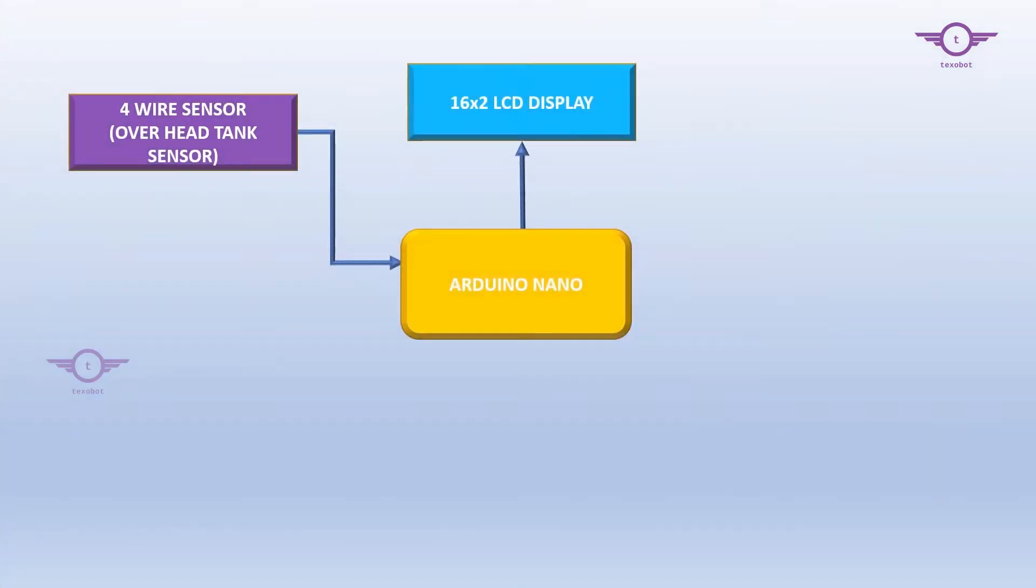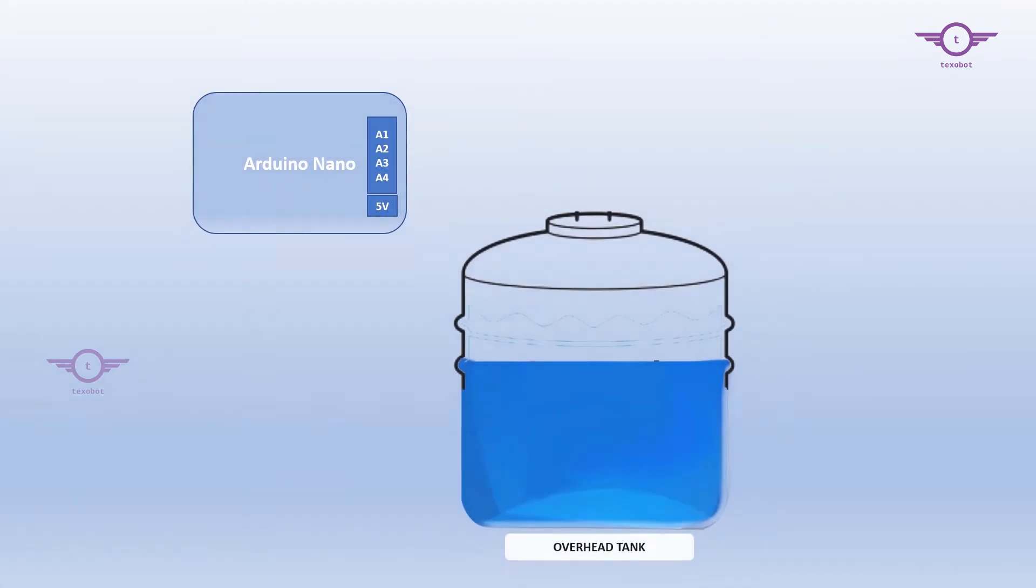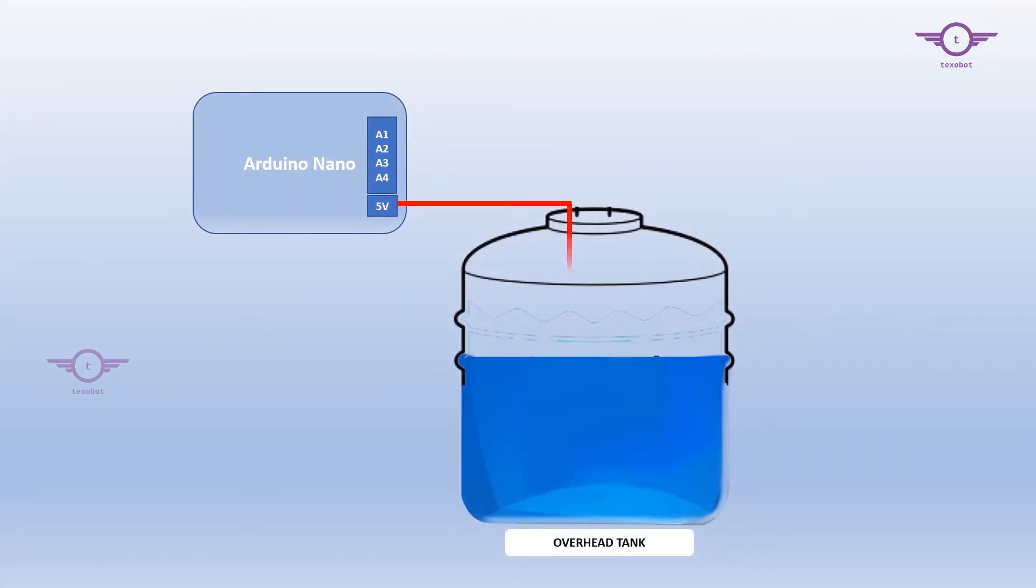The third block is the overhead tank water level sensors. This is used to measure the water level present in the overhead water tank. These are five pieces of wires dipped inside the water tank.